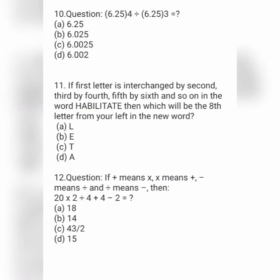Next question: calculate 6.25 × 4 ÷ 6.25 × 3. Option A is 6.25, option B is 6.025, option C is 6.0025, and option D is 6.002.